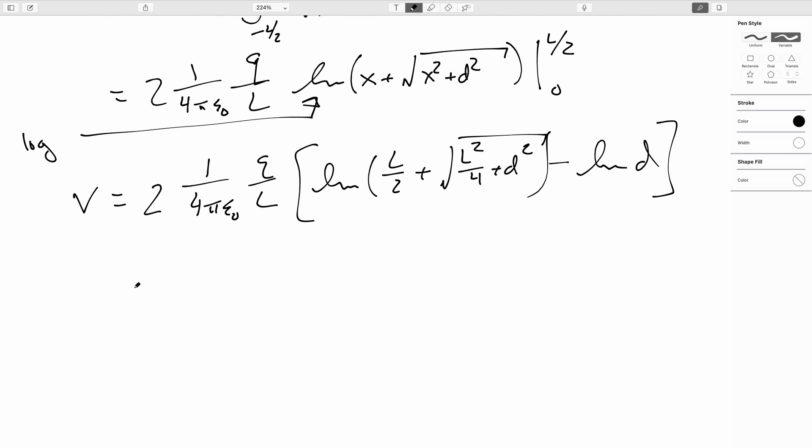And you can probably make this look the prettiest if you remember that log A minus log B is log of A over B. So we finally end up with this is 2 over 1 over 4 pi epsilon naught Q over L times the natural log of L over 2 plus L square root of L squared over 4 plus D squared over D.